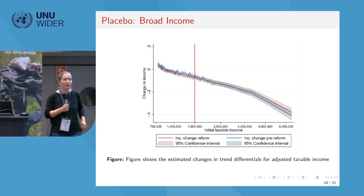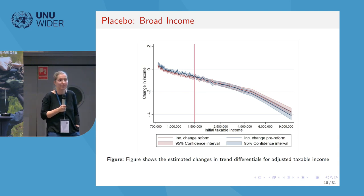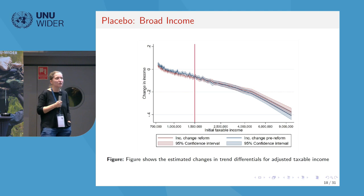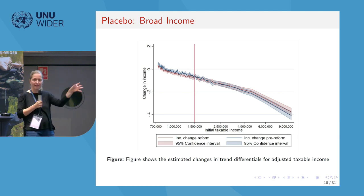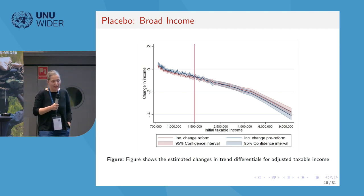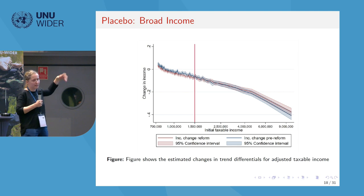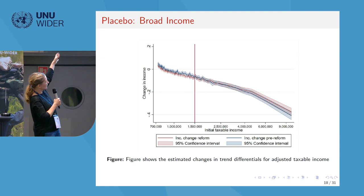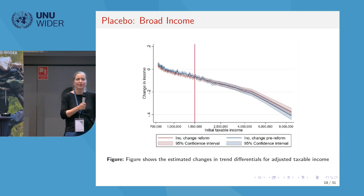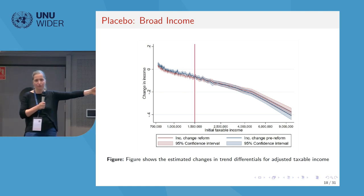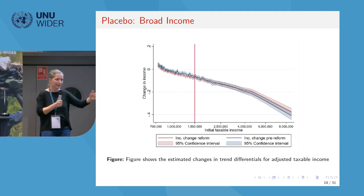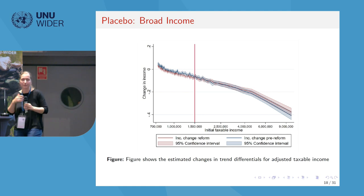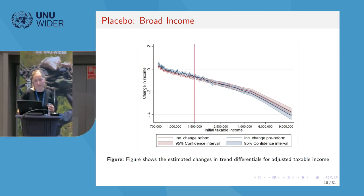You may have concerns about this approach and say perhaps something else happened — perhaps there are just changes in underlying trends over time at the top and lower end of the income distribution. One strategy to address this is to look at placebo tests in the pre-reform period and ask whether we see systematic changes over time. We do not see any systematic changes over time in the pre-reform period, which substantiates that what we see is really a reform-driven effect from the increase in the top marginal tax rate.